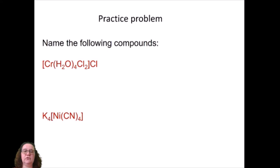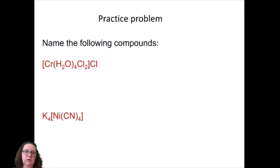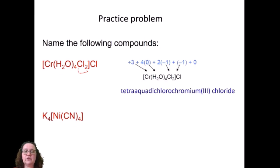Let's have a little practice. I'm going to ask you to stop the video and have a go at naming these two complexes using the rules I mentioned before. For the first one, I've got four molecules of water — water is aqua, so that's tetraaqua — and two chlorides in the coordination sphere, which are chloro, so dichloro. Aqua goes first alphabetically, giving tetraaquadichlorochromium chloride.